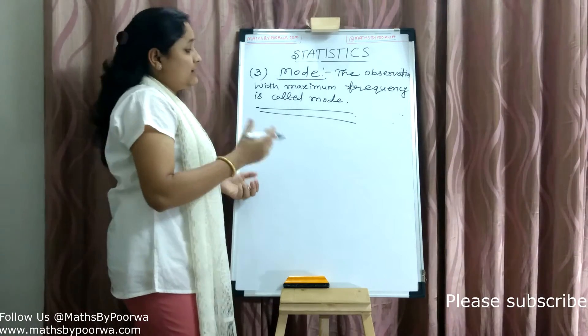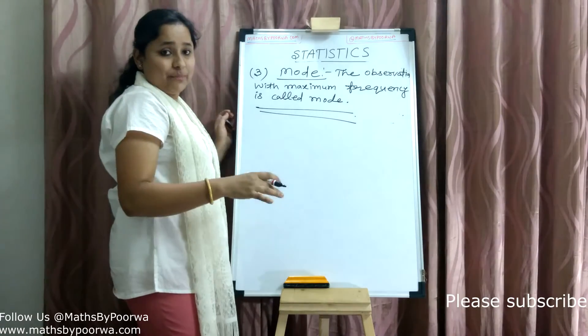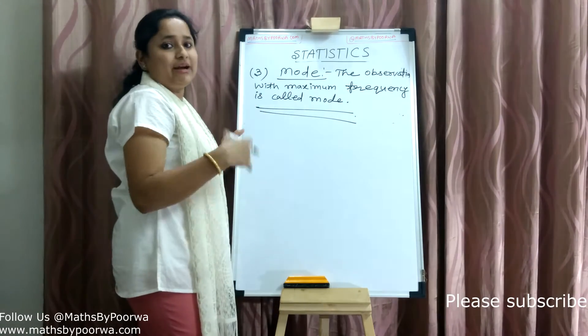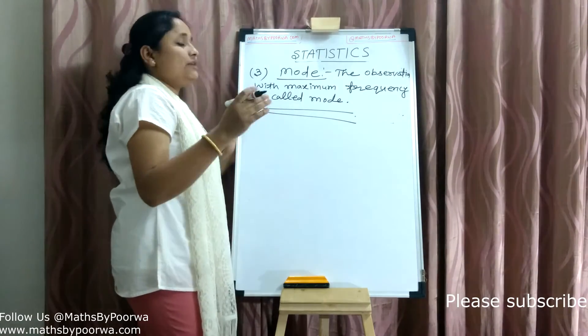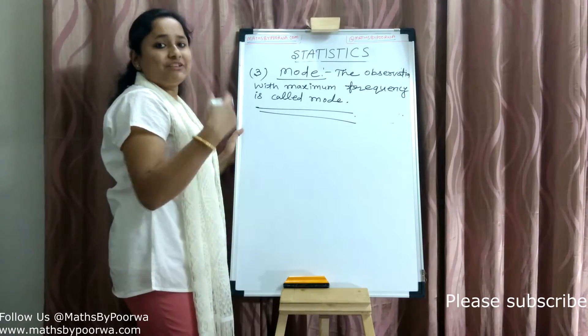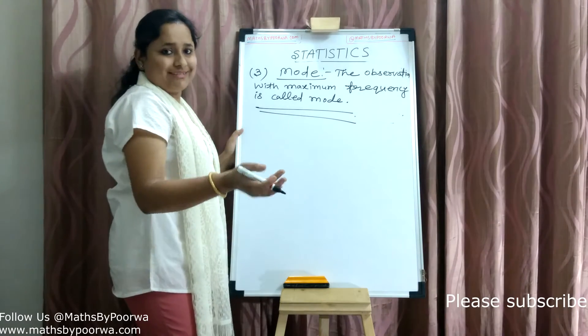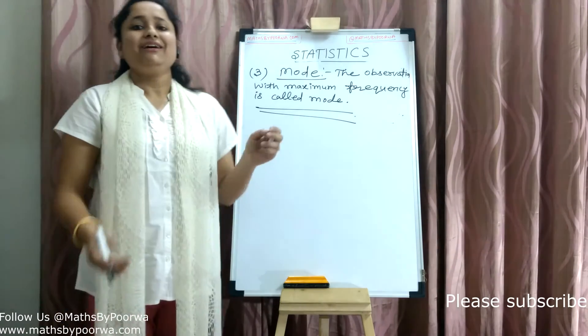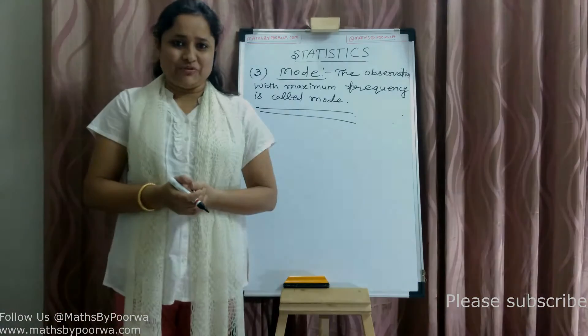So these are the three measures of central tendency — mean, median, and mode. For examples of mean, median, and mode, you can watch my next videos. For more videos, visit mathvaipurva.com.